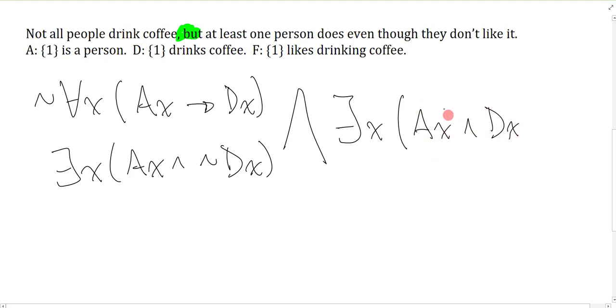And of course, the group here is the person, the property is drinks coffee. Even though they don't like it, even though is the main connective of the property. But that's just an and, so I could put this bracket in, I don't even need it. They don't like it. Not Fx. And that's it.